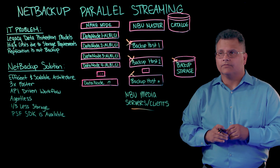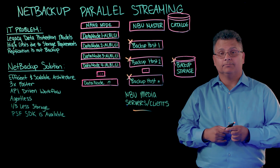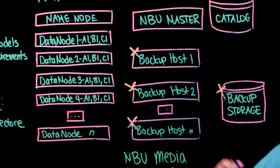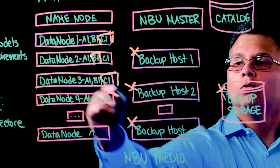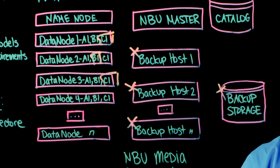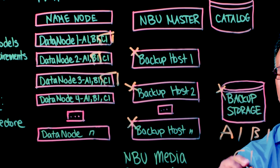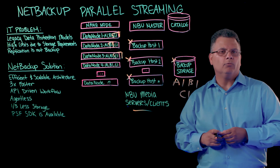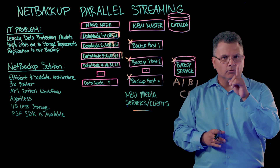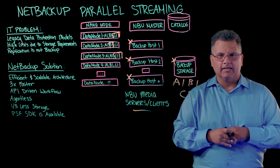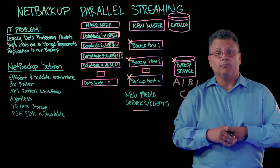Now that we understand the components of the solution, let's talk about the flow of data. At the start of a backup, the master server will trigger the policy to run. The plugin will communicate with the name node, and together they will determine how to distribute the blocks across the environment. Each unique block will be sent through the backup host and land on the storage — an A1 block, a B1 block, and a C1 block. So even though the A1 block lives on multiple data nodes, we only process it one time through one backup host to our storage. This saves a great deal of storage and is why we're a more cost-effective option than the NFS dump.